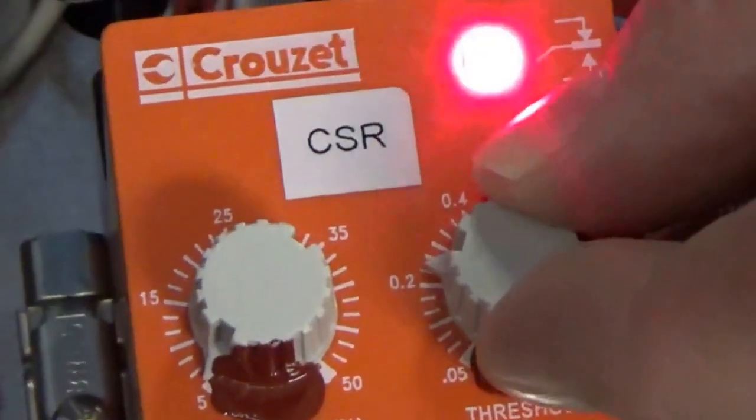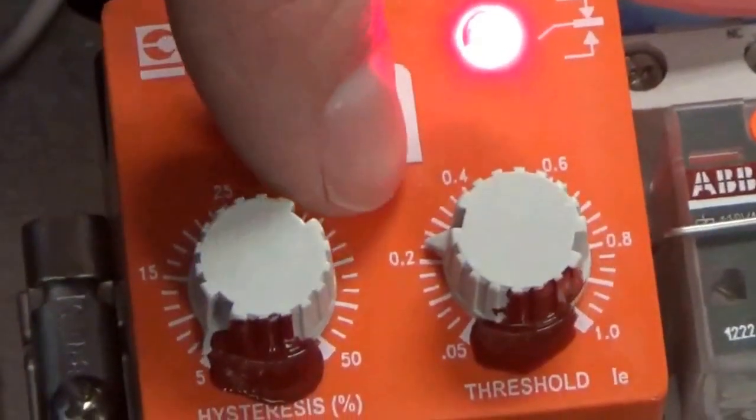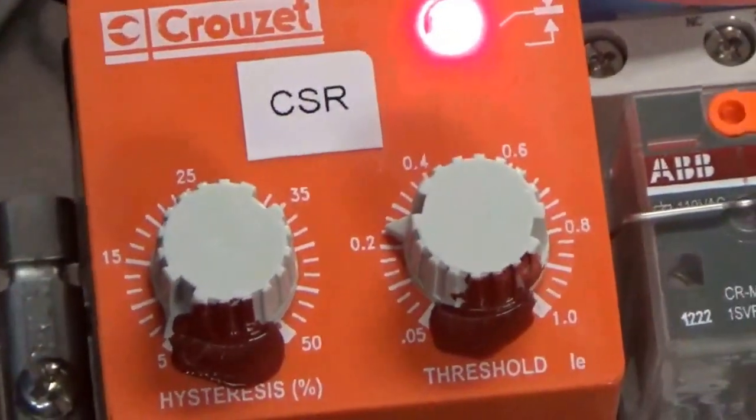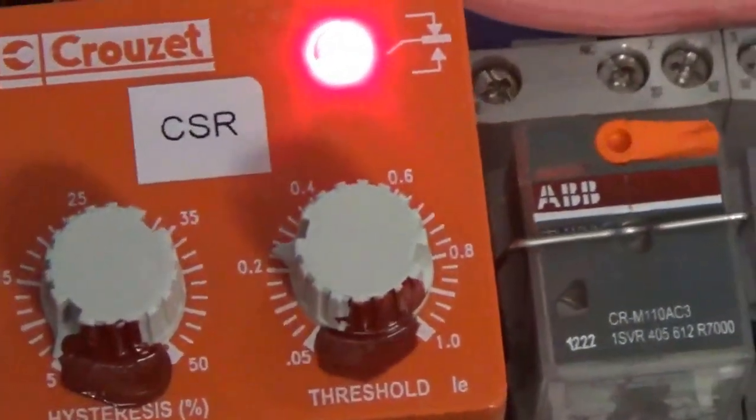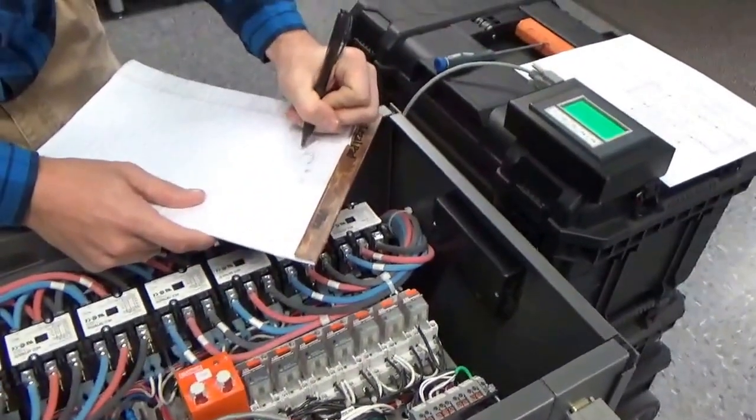Again, toggle it a few times. Make sure you know where that point is. It looks like we're at 0.23. I'm going to turn off control power. I'm going to write that number down. 0.23.